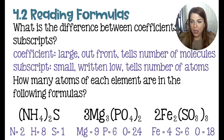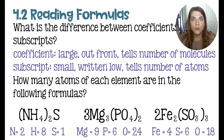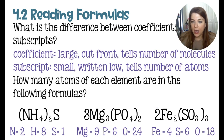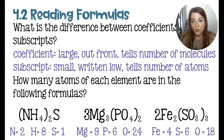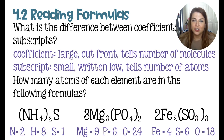Lastly, we have iron three sulfite with a two out front, which applies to everything: two times two gives four irons (Fe). Two times three times the imaginary one behind the sulfur gives six sulfur atoms. Then for oxygen, two times three is six, multiplied by the tiny three behind the oxygen inside the parentheses, giving a total of 18 oxygens.